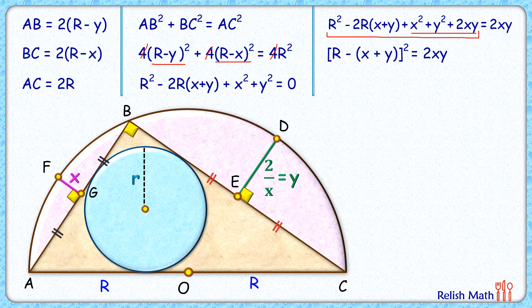Taking square root on both sides will get R as (x + y) ± √(2xy). Now how about this inradius r?